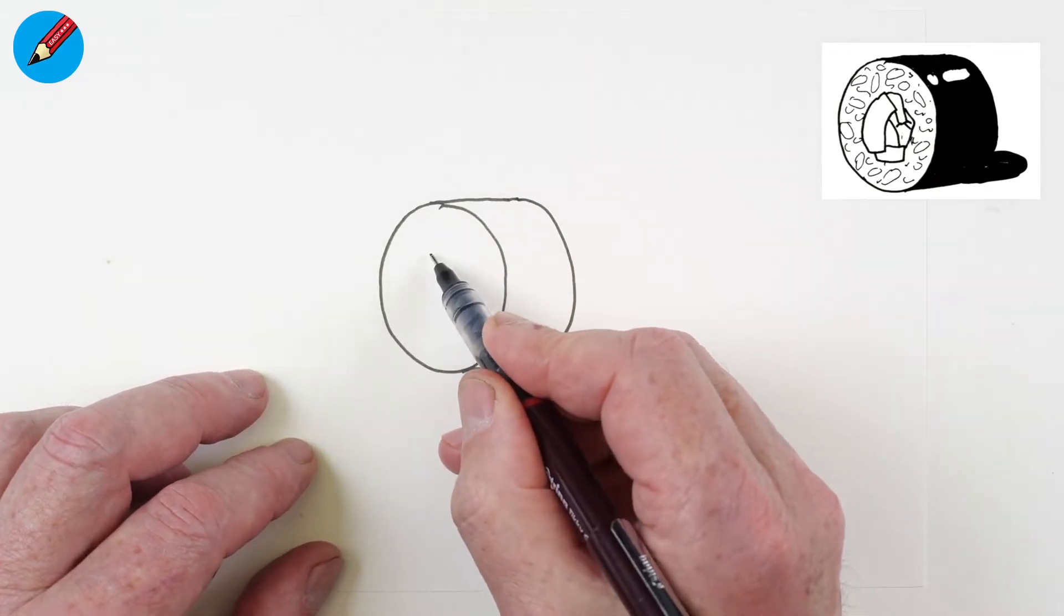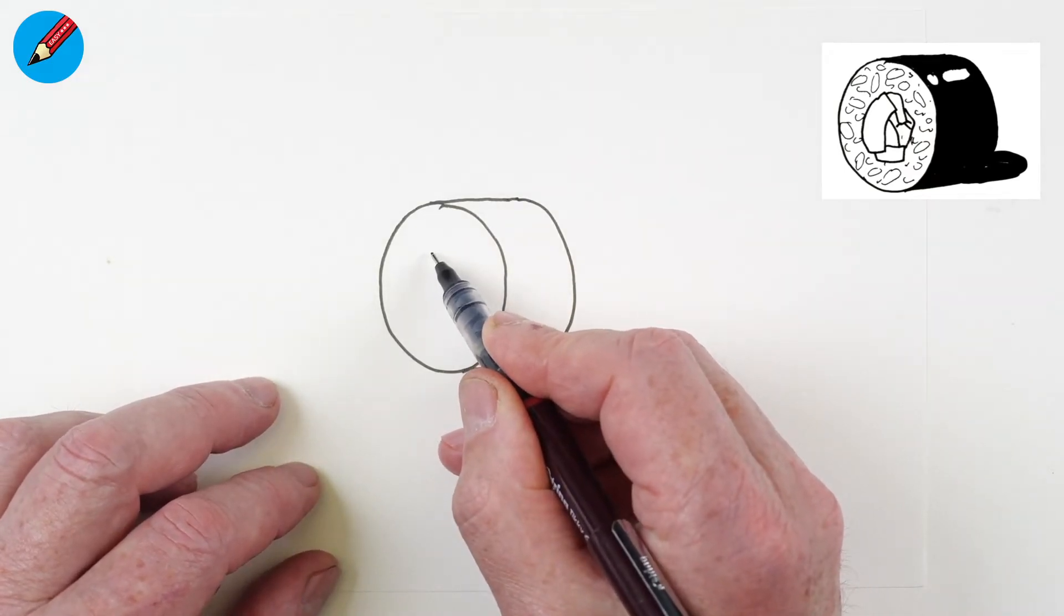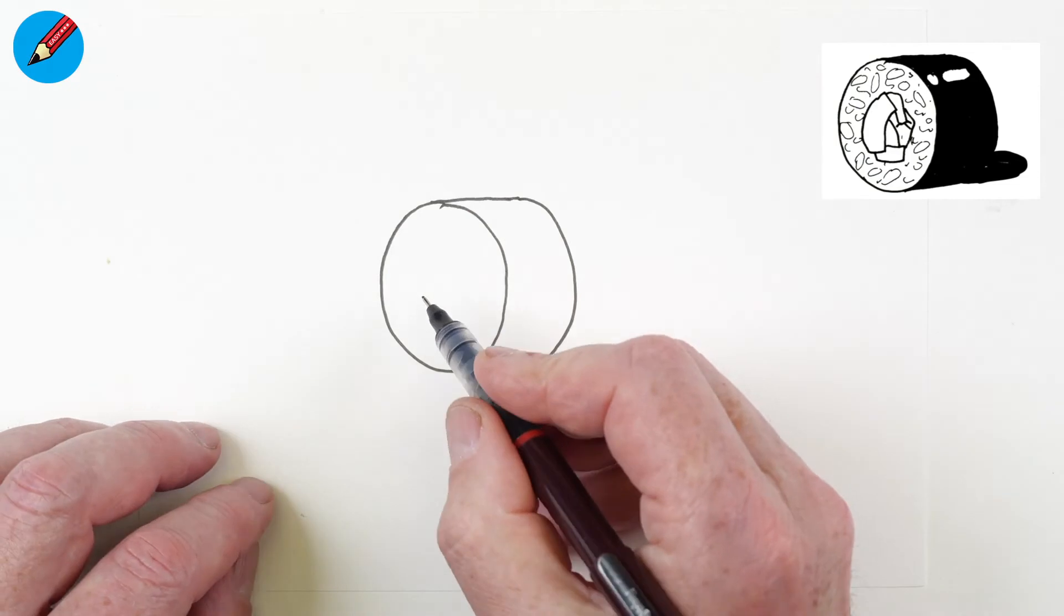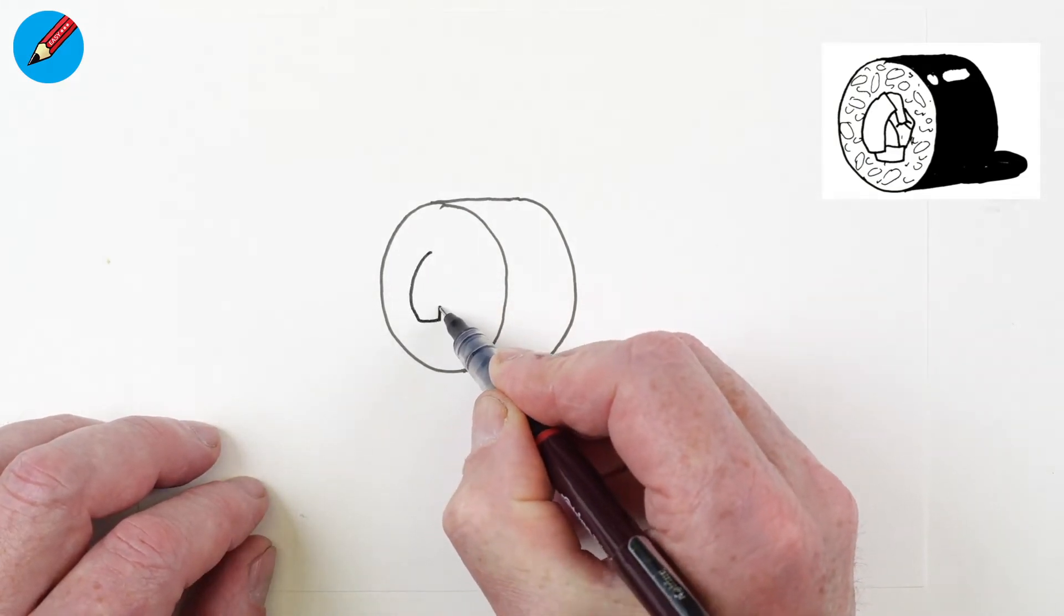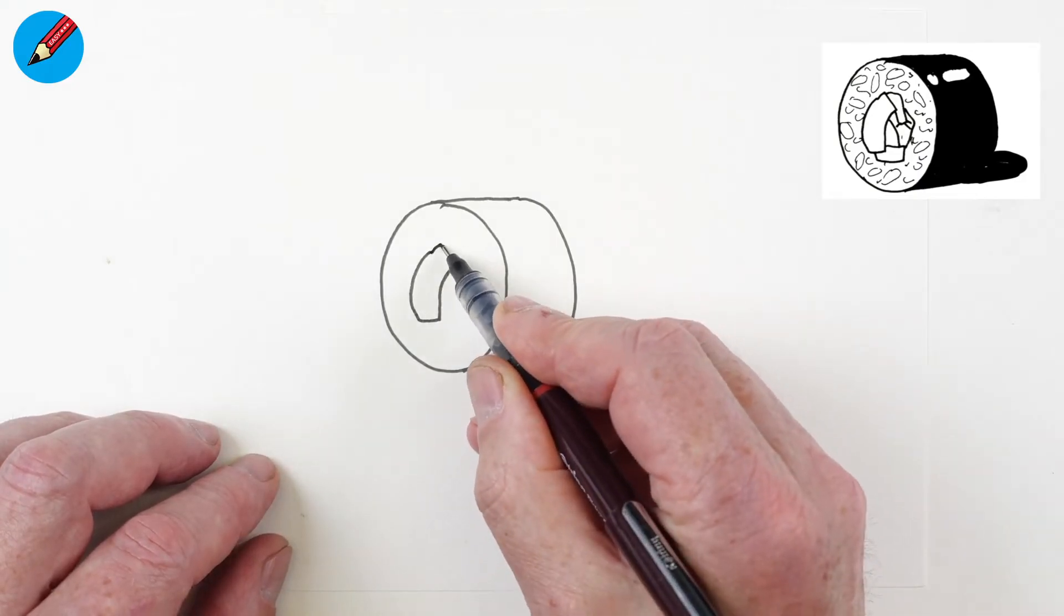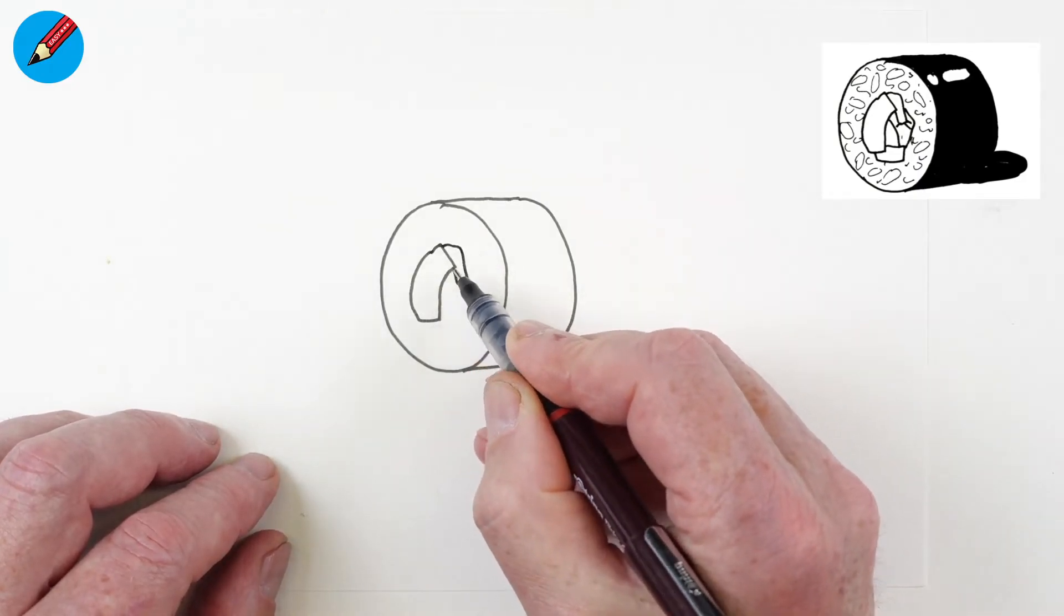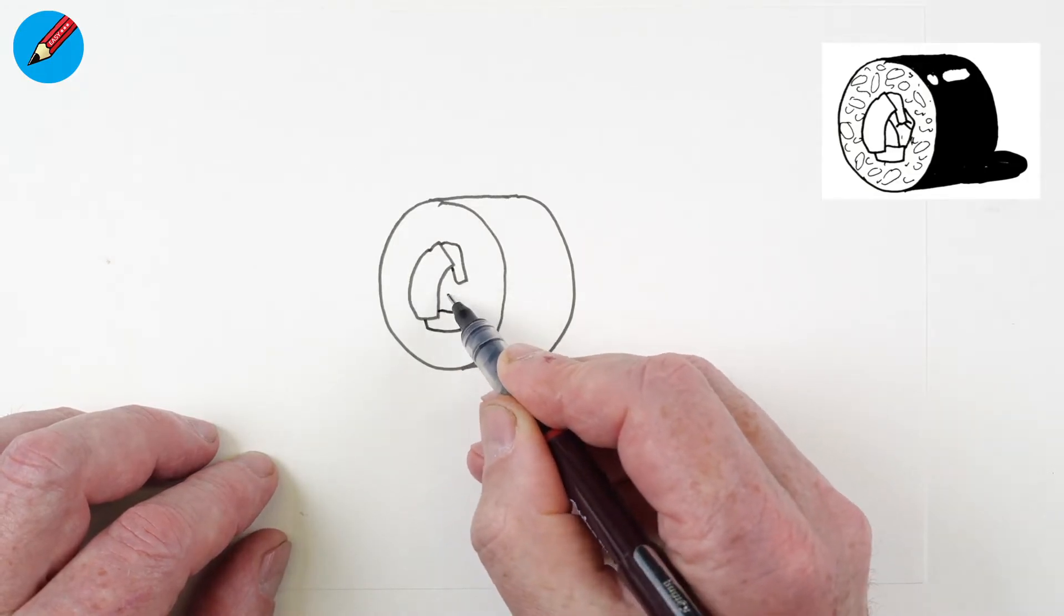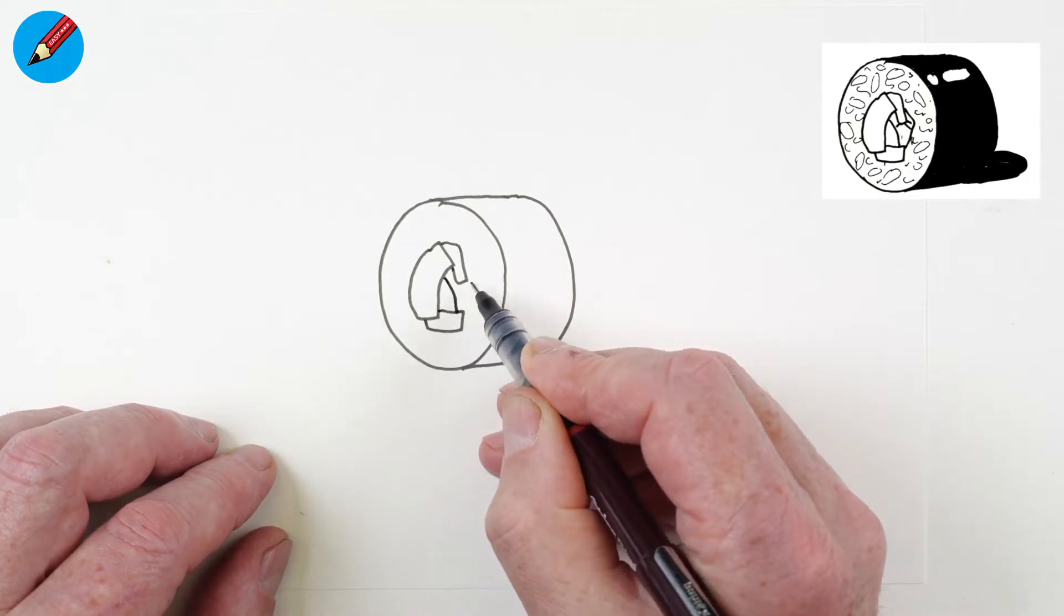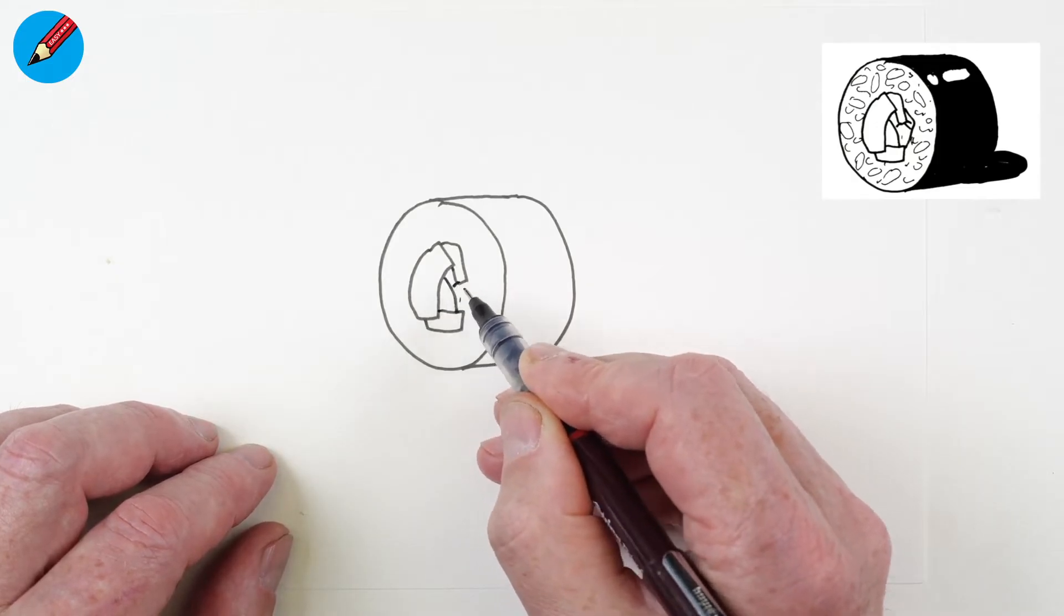And then we want to draw the little bits in the middle. So it's like a roll that's been cut in half. And we want to have a little bit of fish and a little bit of cucumber, a bit of carrot and another bit of carrot and something in there.